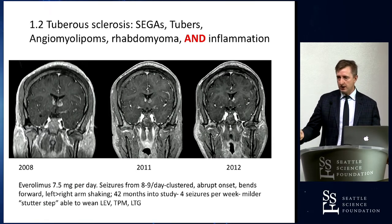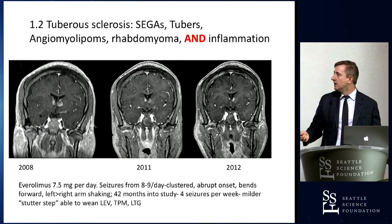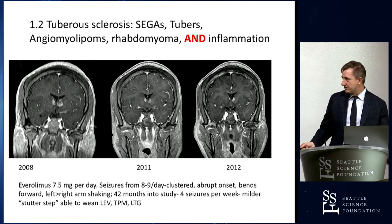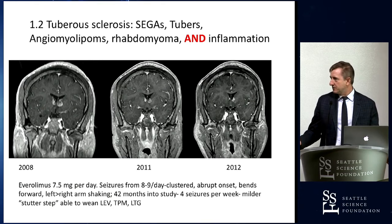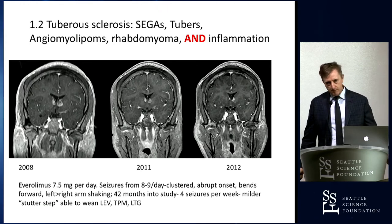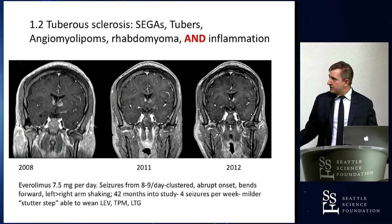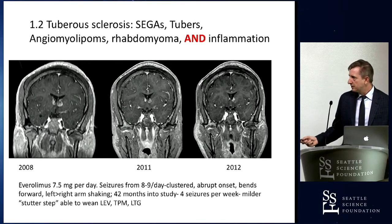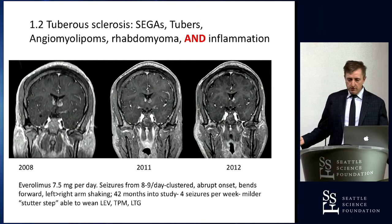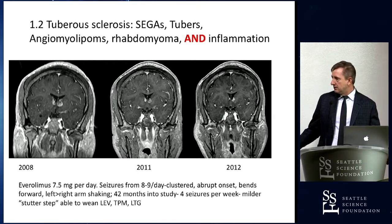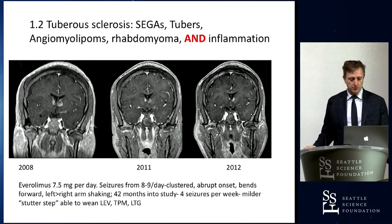Blockage of the foramen of Monro leads to the clinical compromise of hydrocephalus. For years they targeted this with gamma knife or surgical therapies, but in the last decade it's really been the mTOR inhibitors — rapamycin, sirolimus, everolimus. This patient went to Cincinnati for their trial and was treated with everolimus, with two notable outcomes: reduction in SEGA size, and markedly improved seizure frequency.